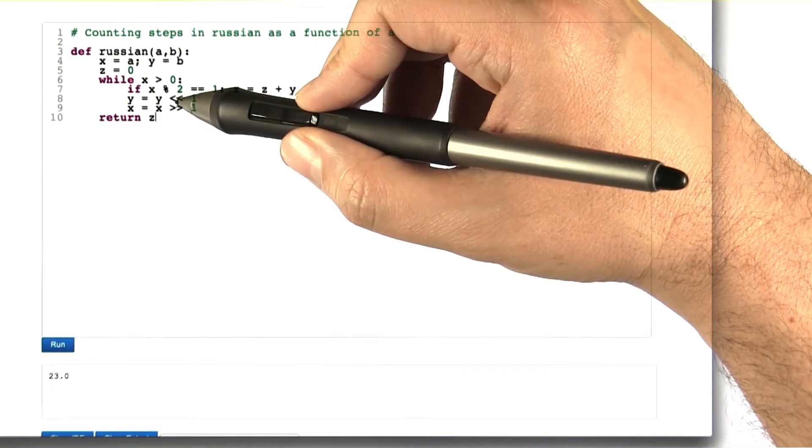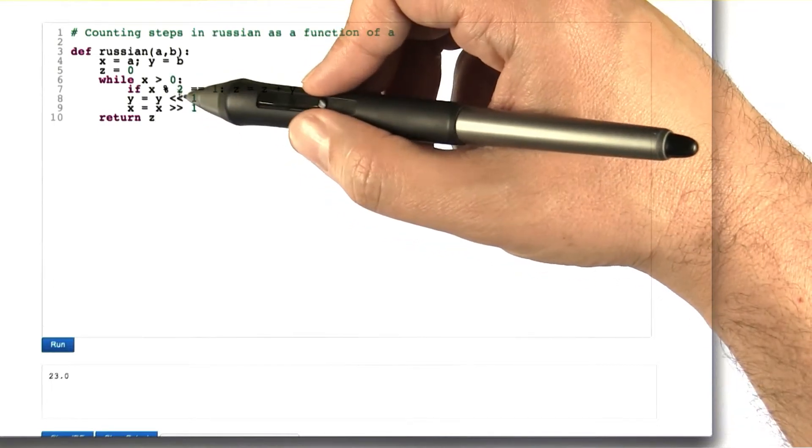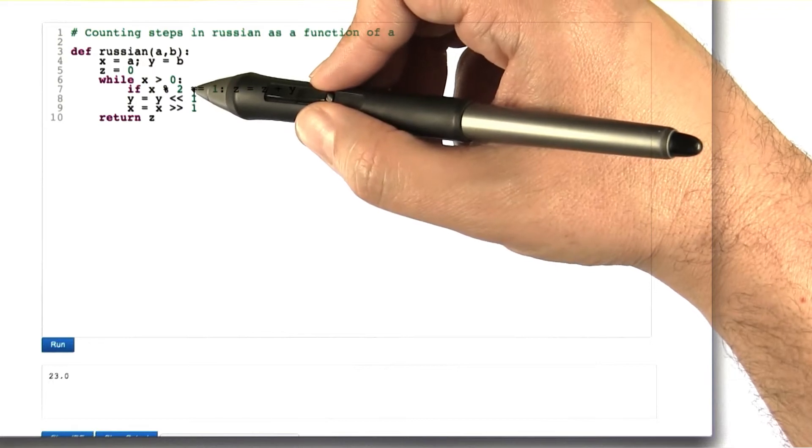This is the floor log base 2 of a plus 1. And for each of those times, how many statements get executed?